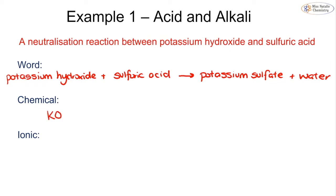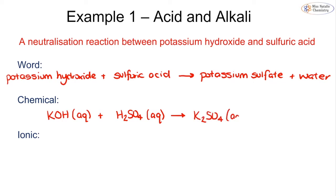Now we convert this into a chemical equation. Potassium hydroxide has the formula KOH with a state symbol of aqueous. Sulfuric acid is H2SO4, also aqueous — all acids and alkalis are always aqueous. The salt works out to be K2SO4 which is aqueous, and water is H2O with a state symbol of liquid. When writing the ionic equation, we focus on everything with the state symbol of aqueous.